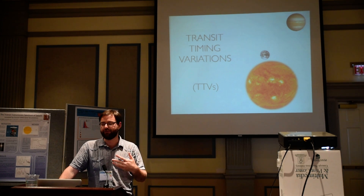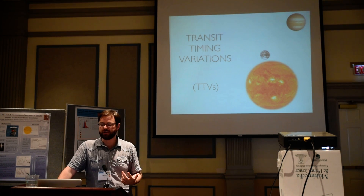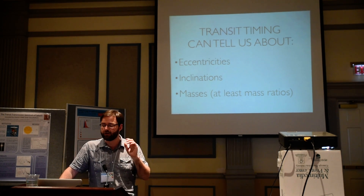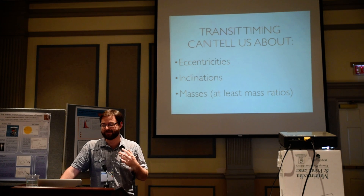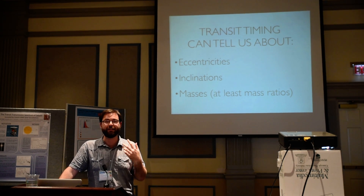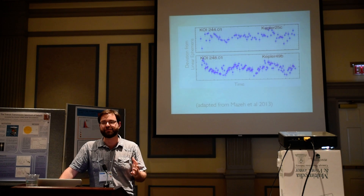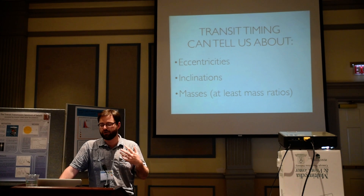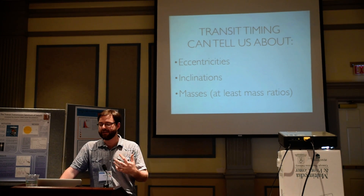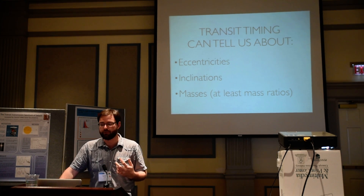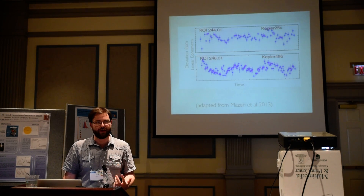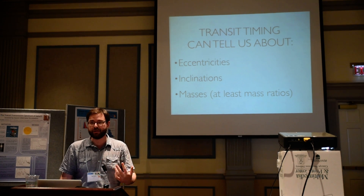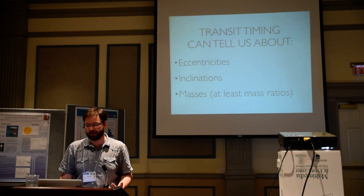You will see this in Kepler data and can infer the presence of another planet or measure its parameters. If the planet's more massive, maybe you have a bigger signal. The key takeaway is that transit timing can tell us primarily about eccentricities of exoplanets, inclinations, and the masses — or at least mass ratio, mass of the planet relative to the mass of the star.